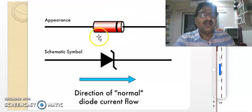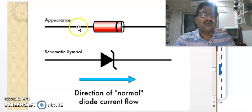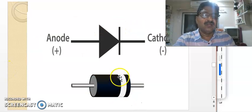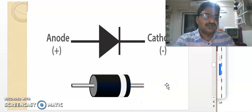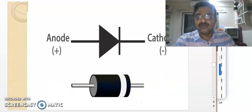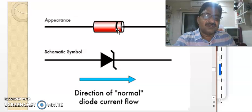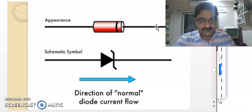Practically, when you hold a Zener diode in hand, to identify which electrode is positive (anode) and which is negative (cathode), observe the ring on the body — the same way as a regular diode. The ring-side electrode is the cathode and the other is the anode. In the figure, you can carefully observe there is a ring shown on the body towards one electrode, making that electrode the cathode, and the other the anode.